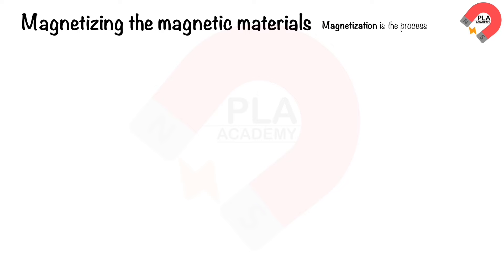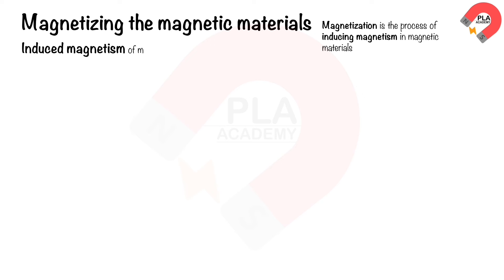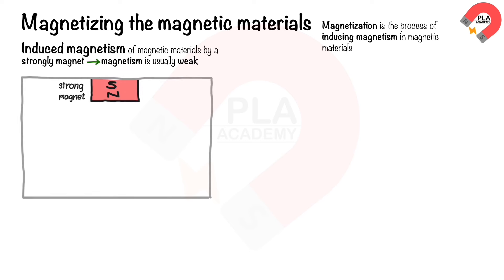Magnetizing magnetic materials: magnetization is the process of inducing magnetism in magnetic materials. There are three ways to magnetize a material. First, induced magnetism — iron and steel can be magnetized when placed near a magnet, but the magnetism is usually weak.